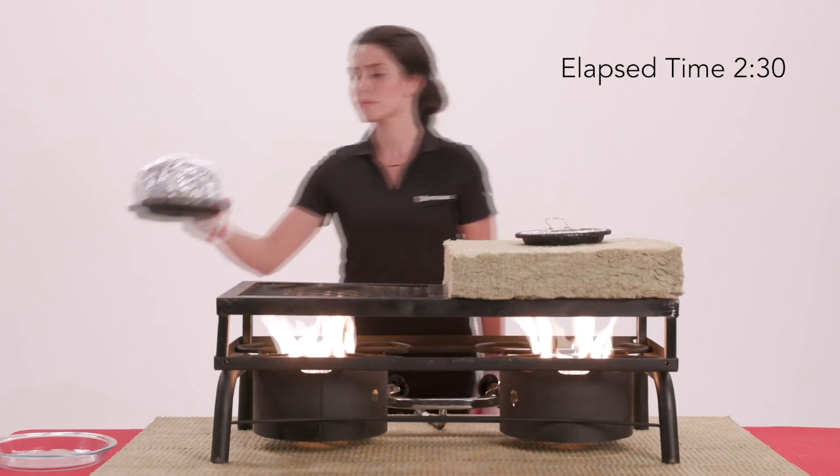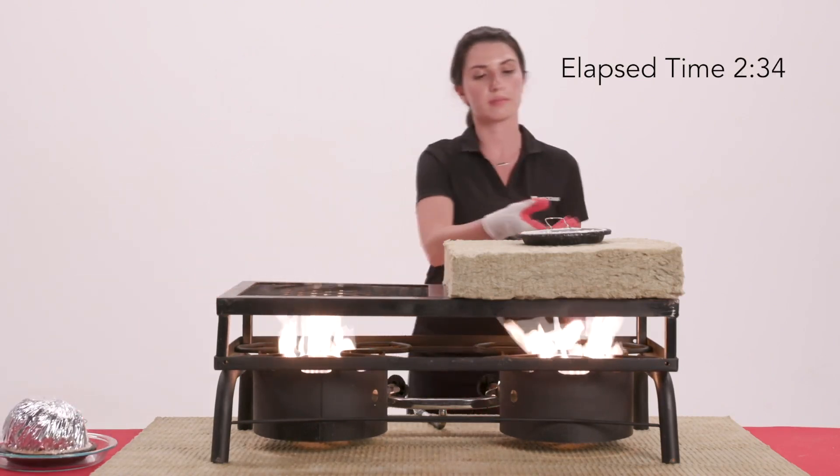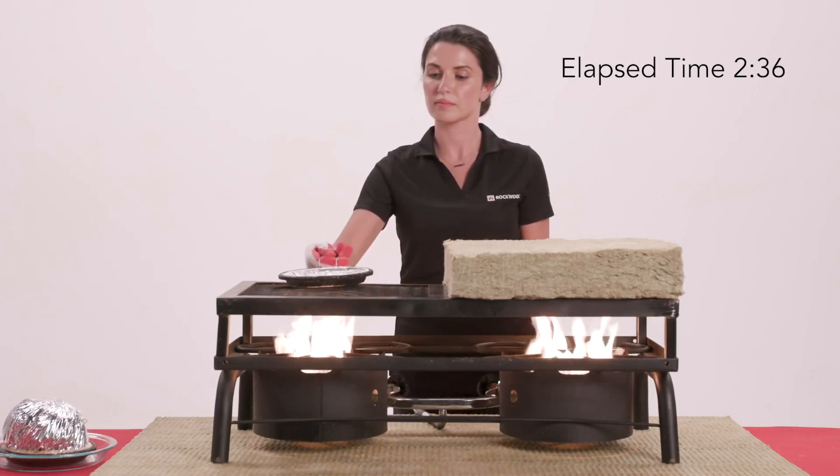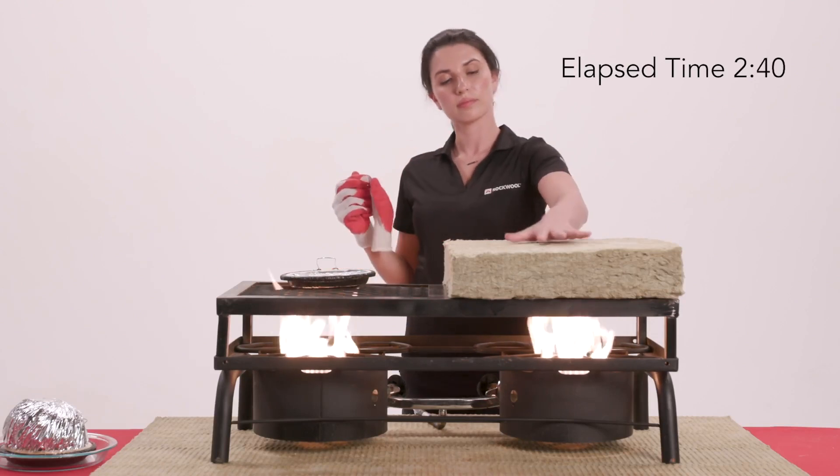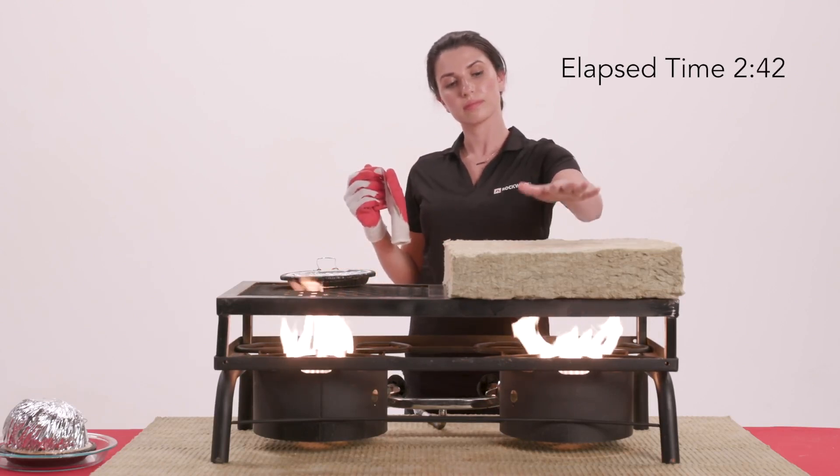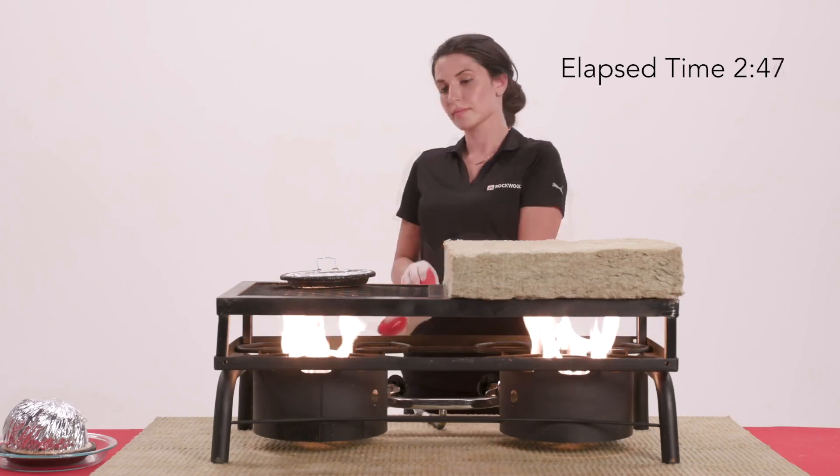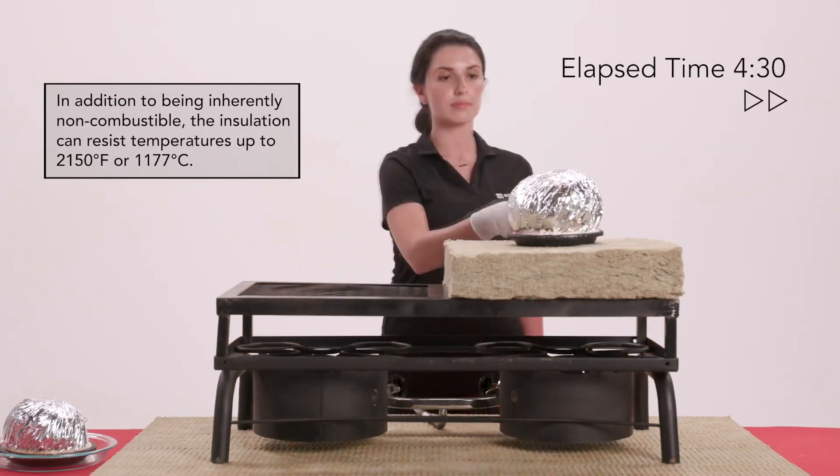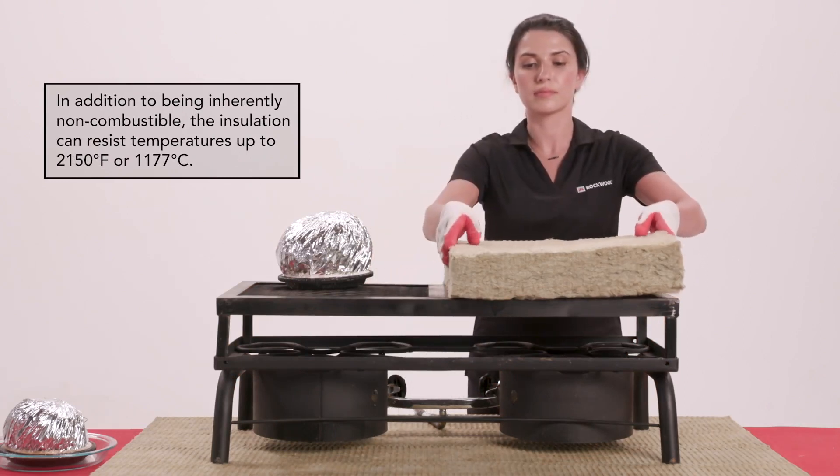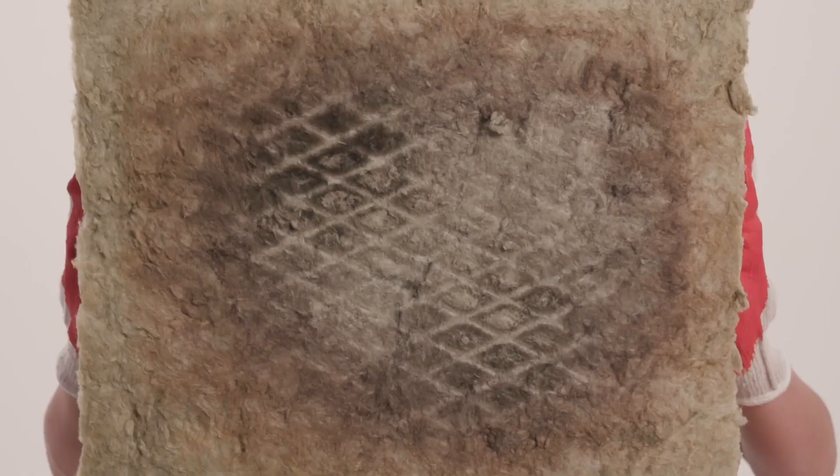After a couple of minutes, you can see that the popcorn directly over the flame begins to pop, but the one sitting on the insulation remains unpopped. We then move the unpopped popcorn from the stonewool insulation over to the direct flame and after just a couple of minutes, it too starts to pop. After the popcorn is popped and the burners are turned off, you can see that the stonewool insulation exposed directly to the open flame is charred, but did not burn or produce any smoke.